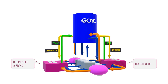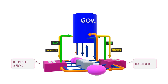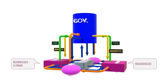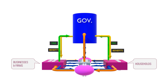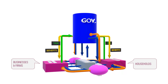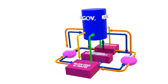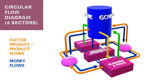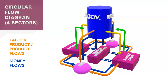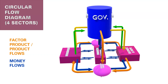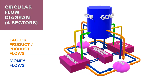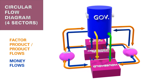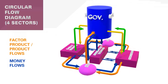In return, the government creates programs to give back benefits to the economy. With that, we now have a four-sector diagram. Let's move on to add the last sector.